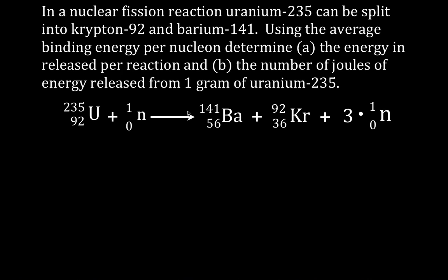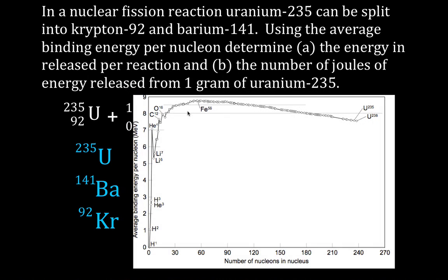We're going to determine the amount of energy released in the reaction using the average binding energy for uranium, barium, and krypton. This is the chart you often see of average binding energy per nucleon versus number of nucleons. Uranium-235 is here, and barium and krypton would be up here, but it's kind of hard to read exact values off the chart.